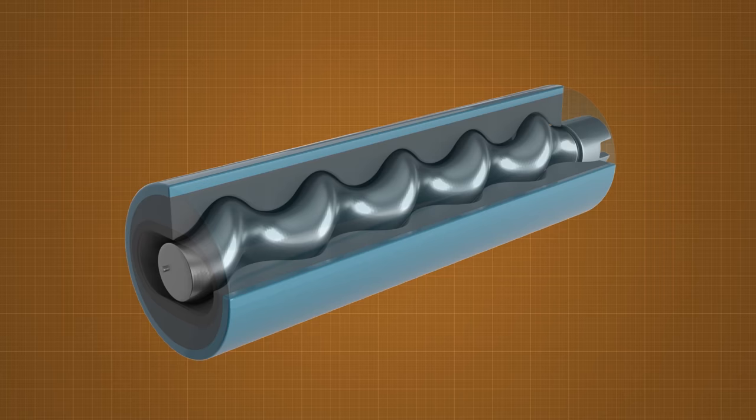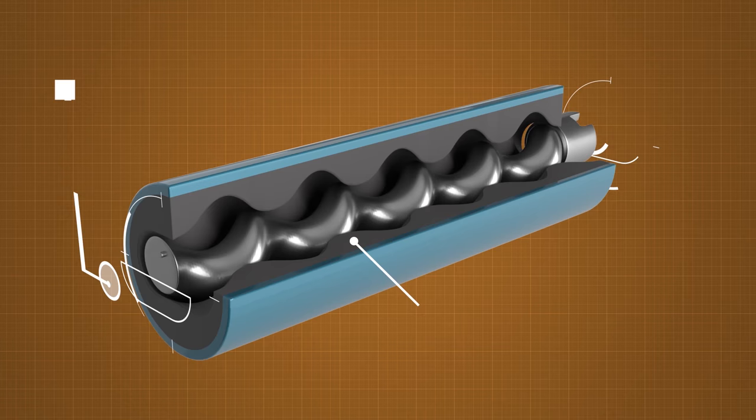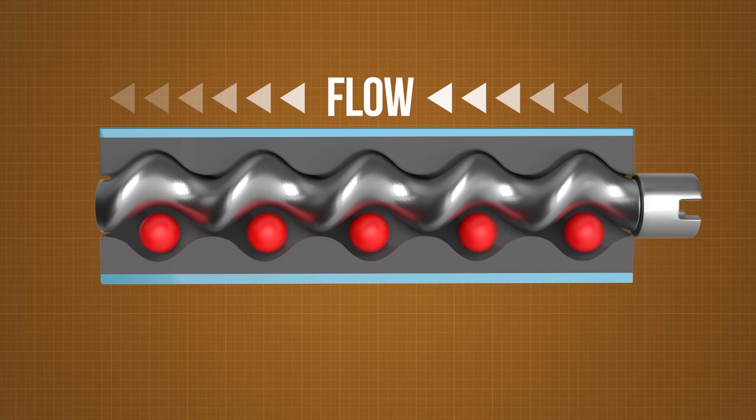The spiral steel shaft that's called the rotor creates conveying chambers at the inner outline of the rubber tube, the stator. By turning the rotor, the conveying chambers move in the direction of flow. This way, a continuous flow of material is achieved.